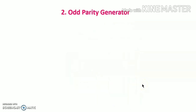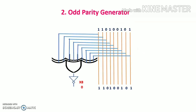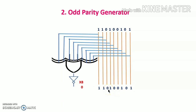Similarly, for the odd parity generator, the diagram is the same except a NOT gate is attached at the output. For the same input number with five 1s — which has odd parity — the XOR gate generates 1 output. The NOT gate inverts that 1 and gives 0 output, so 0 is attached to the original number. Hence the parity of the number remains odd. In this way even and odd parity generators work. Thank you.